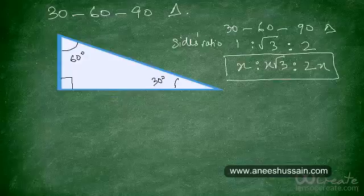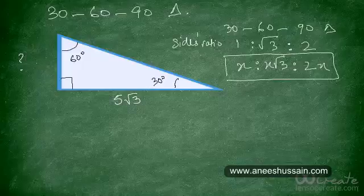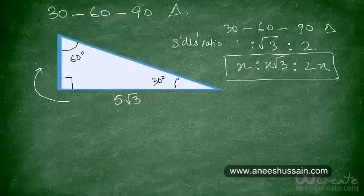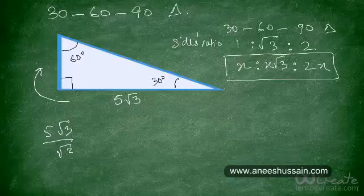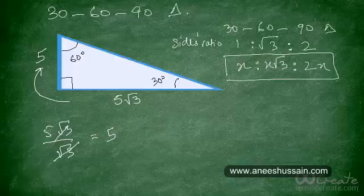Now suppose the side opposite 60° is equal to 5√3. What would the perpendicular side — opposite 30° — be? To go from the side opposite 30° to the side opposite 60°, we multiply by √3. So to come back, we divide by √3. Dividing 5√3 by √3 gives 5. So the shortest side is 5, and the hypotenuse is twice that, which is 10.